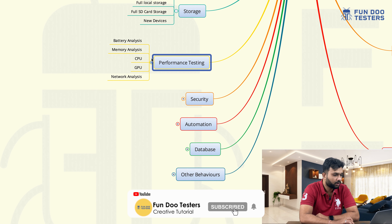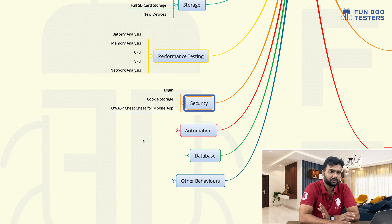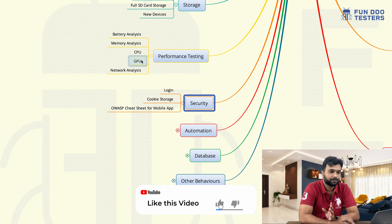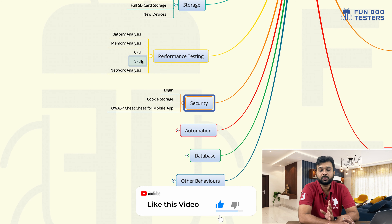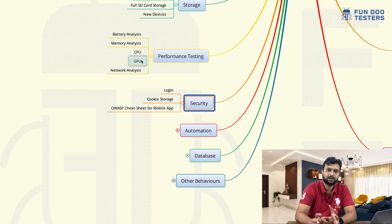Later on, performance testing. Performance testing and security testing is a part of the security or performance team. But ideally we should know basic things like battery analysis, memory analysis, CPU, GPU, and network analysis. For Android application, we can do this using Android Studio. For iOS, we can do it using Instruments. There are two different software tools using which we can do the basic analysis. Generally, we have to capture the logs and analyze the logs.